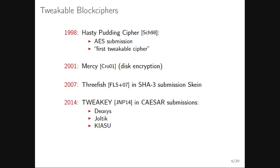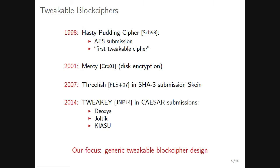Tweakable block ciphers have quite a history. It started in 1998 when ciphers had names like Hasty Pudding Cipher — an AES submission and the first tweakable block cipher, though it didn't pass the first round due to flaws. Notable milestones include Mercy for disk encryption, Threefish used in the SHA-3 finalist Skein, and in 2014 the TWEAKEY framework, used in CAESAR submissions like Deoxys, Joltik, and Kiasu.